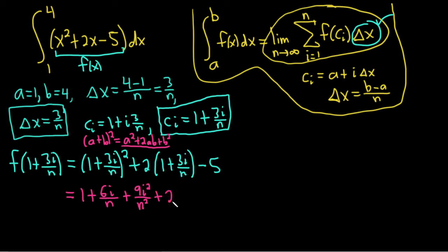So I've seen people do that. It happens. So plus 2 times 1 is 2. And then 2 times this will be 6i over n. And then we have the minus 5 here that's hanging out. Okay, so let's combine like terms. And just as a formality, I'm going to put all of the terms of highest degree first. So, like, the i² terms first. So I'm going to put that one first. So this would be 9i²/n². 6i/n plus 6i/n is 12i/n.